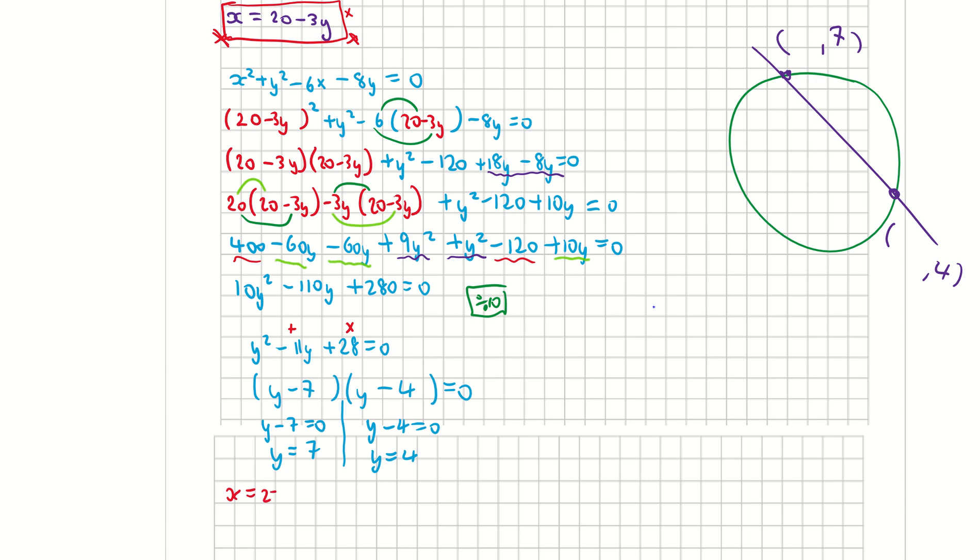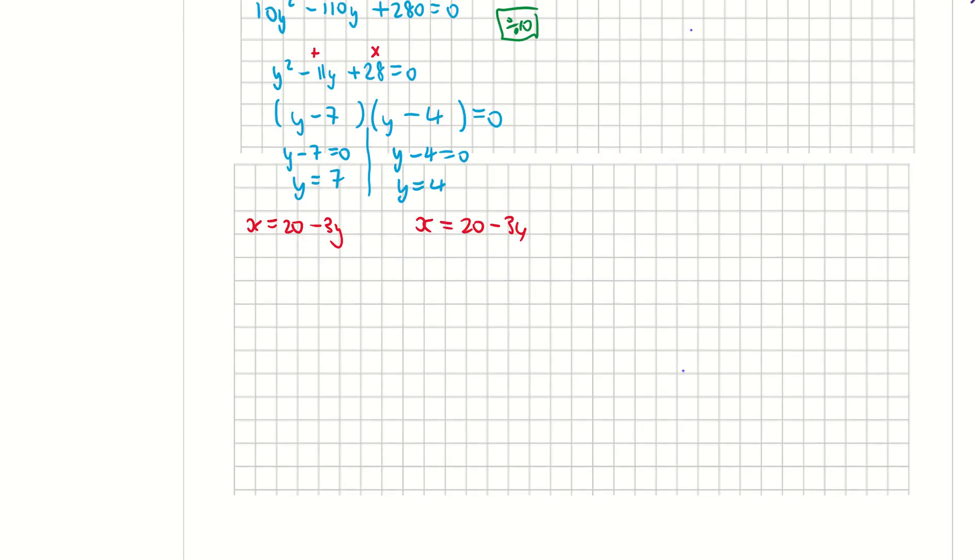So I have x = 20 - 3y, and I'm going to do it out twice for both my values of y now. I'm going to substitute in my two values for y, my 7 and my 4. That means I have x = 20 - 3 × 7, which gives me x = 20 - 21, so x = -1. And on my second one, I have x = 20 - 3 × 4, which is 20 - 12, giving me x = 8.